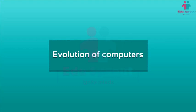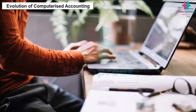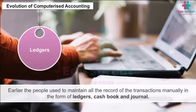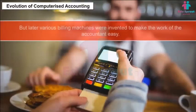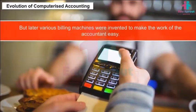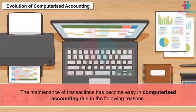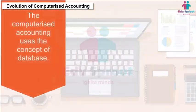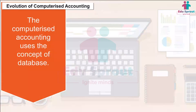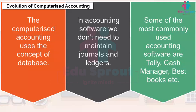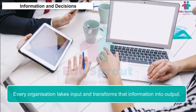Evolution of Computerized Accounting: Earlier, people used to maintain all records of transactions manually in the form of ledgers, cash books, and journals. Later, various billing machines were invented to make the work of the accountant easier. The maintenance of transactions has become easy in computerized accounting, which uses the concept of a database in accounting software — we no longer need to maintain journals and ledgers manually. Some commonly used accounting softwares are Tally, Cash Manager, Best Books, etc.